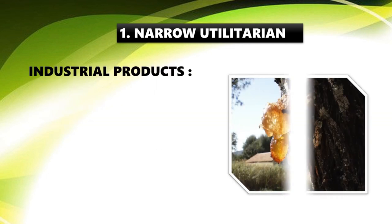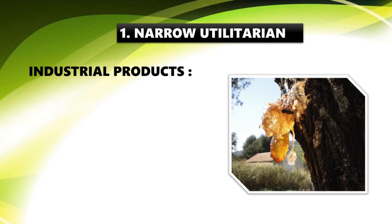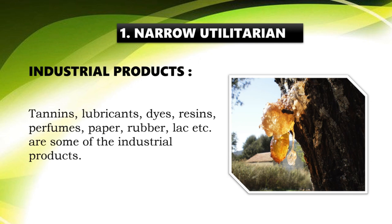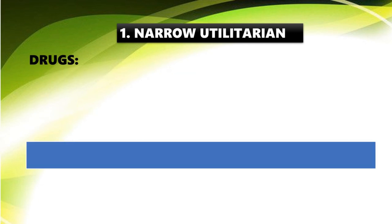Industrial products include juice, gum, bark, tannins, lubricants, dyes, resins, perfumes, paper, and rubber. We use rubber trees for rubber, and tannins and resins from other plants. These are also direct benefits of biodiversity.